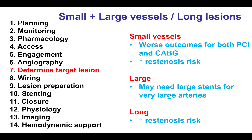Moving on to performing percutaneous coronary intervention, special considerations for small vessels is that they do have increased restenosis risk if PCI is done. However, outcomes are also not as good when bypass is done, as performing bypass in small vessels has higher risk of subsequent graft failure. When it comes to large vessels, larger stents may be required — we currently have a 5.0 mm Resolute Onyx stent available. For long lesions, the risk of restenosis is increased, which should be taken into account when deciding between PCI versus surgical revascularization.